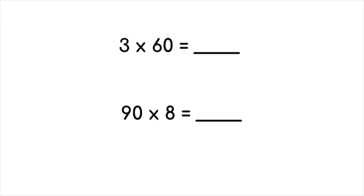Let's continue working with multiples of 10. We're going to look for our basic fact, which in this one will be 3 times 6. 3 times 6 gives us 18. And then we're going to go ahead and add the one zero to make it 180. 3 times 60 equals 180.